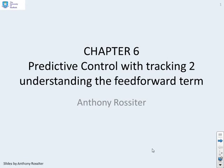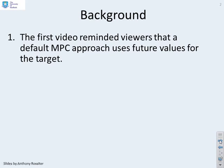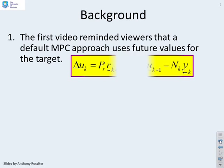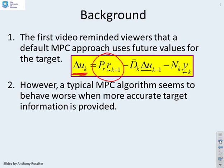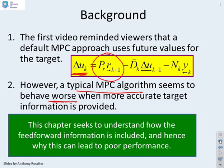This video on tracking seeks to understand how the feedforward term works. The first video reminded viewers that a default MPC approach such as GPC does allow you to use future values of the target. Future values come in through a term in the control law and affect the current control increment delta u. However, what was also demonstrated through many examples is that a typical MPC algorithm such as GPC seems to behave worse when more accurate target information is provided. In this chapter we seek to understand how this feedforward information is included and hence why this can lead to poor performance — which is the baseline for asking how we can do better.